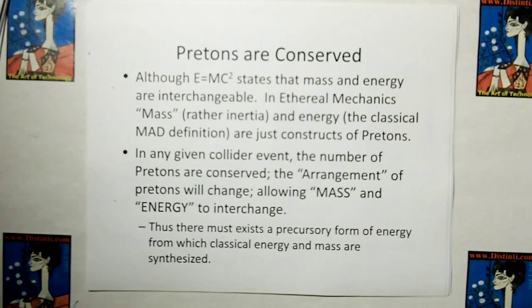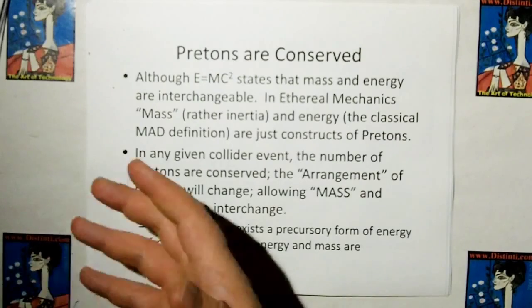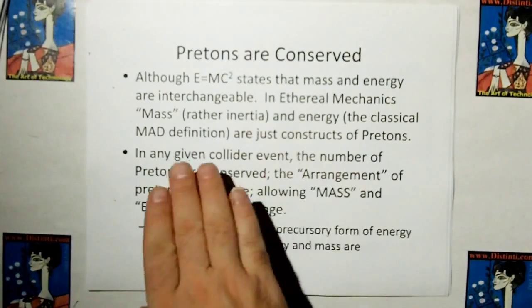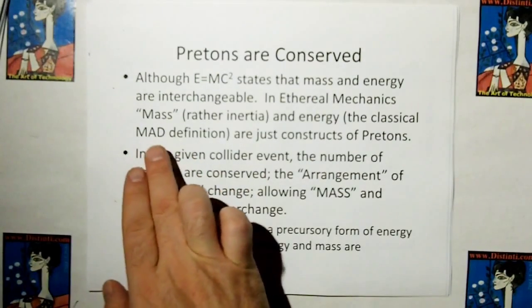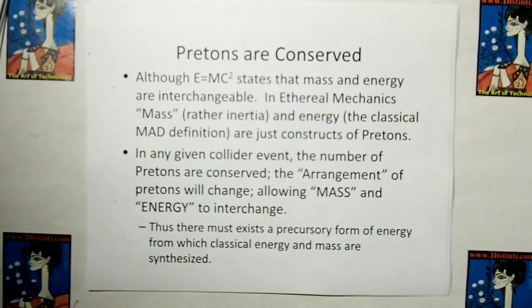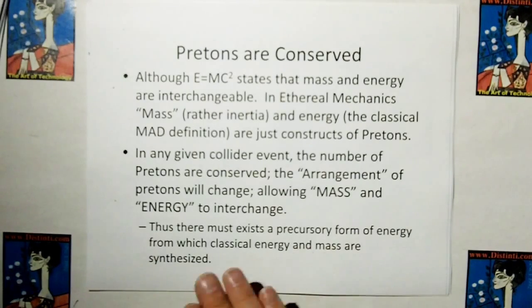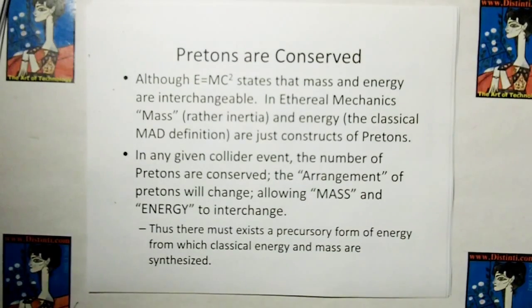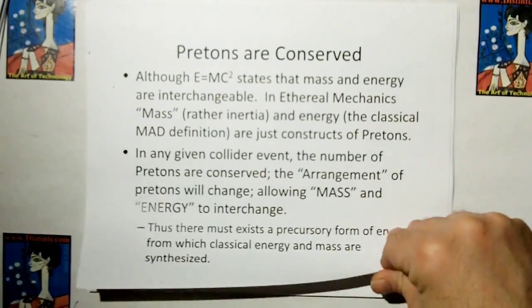Although E equals MC squared states that mass and energy are interchangeable, in ethereal mechanics, mass or rather inertia and energy, the classical mass times acceleration times distance definition, are just constructs of pretons. In any given collider event, the number of pretons are conserved. However, the arrangement of pretons will change, allowing mass and energy to interchange. Thus, there must exist a precursory form of energy from which classical energy and mass are synthesized.